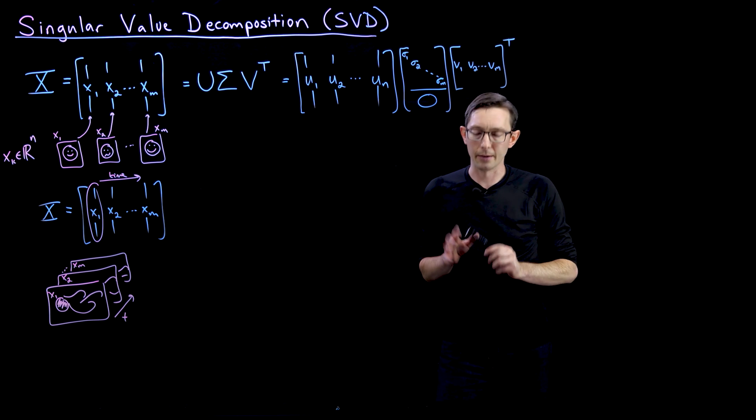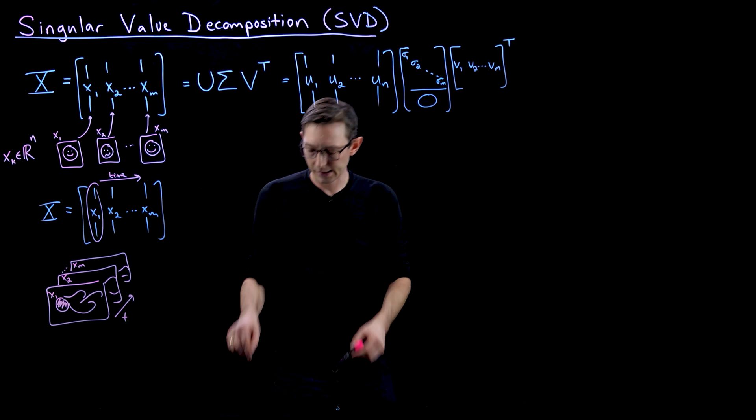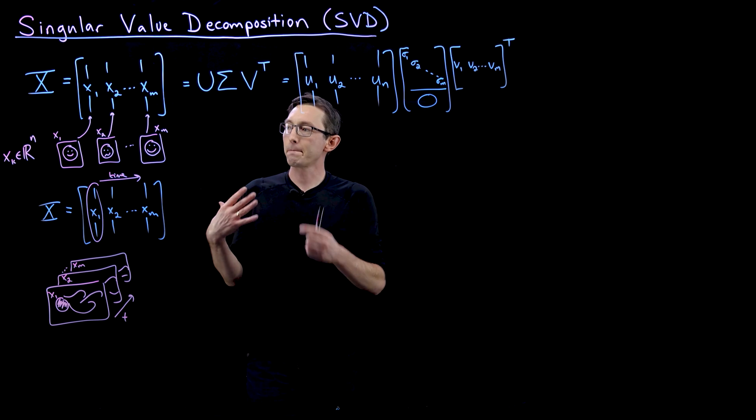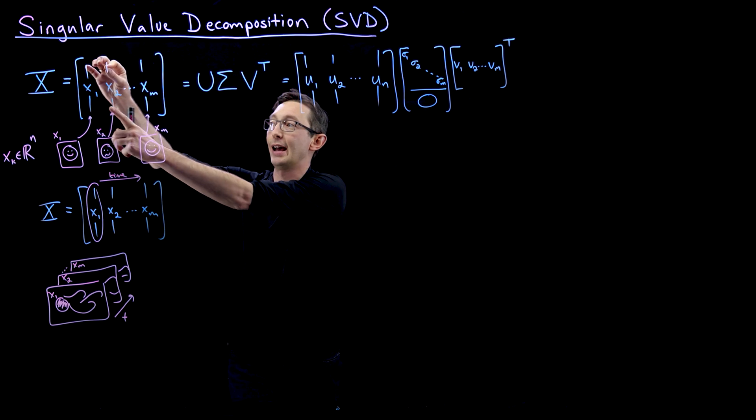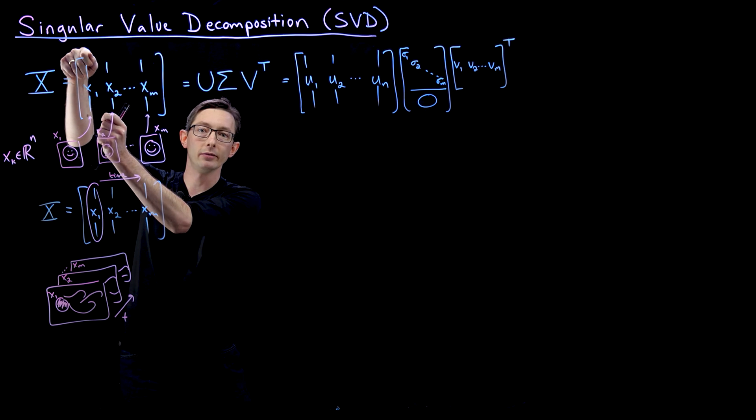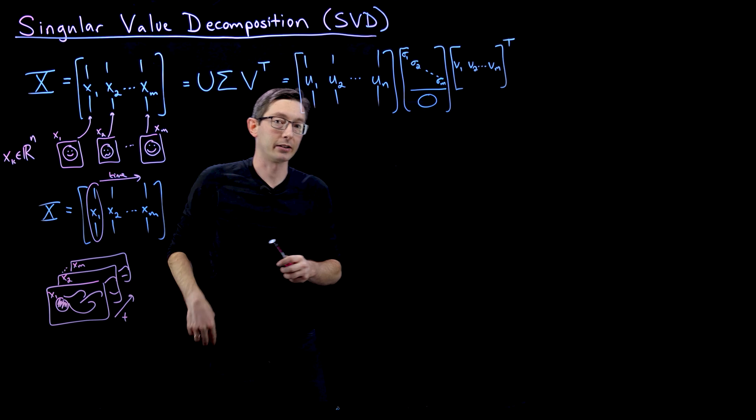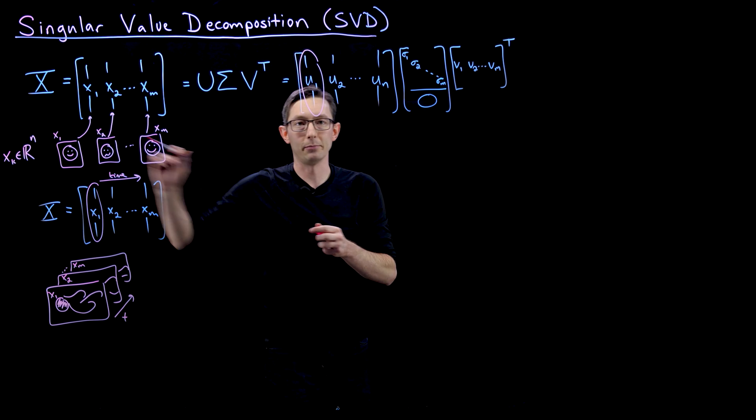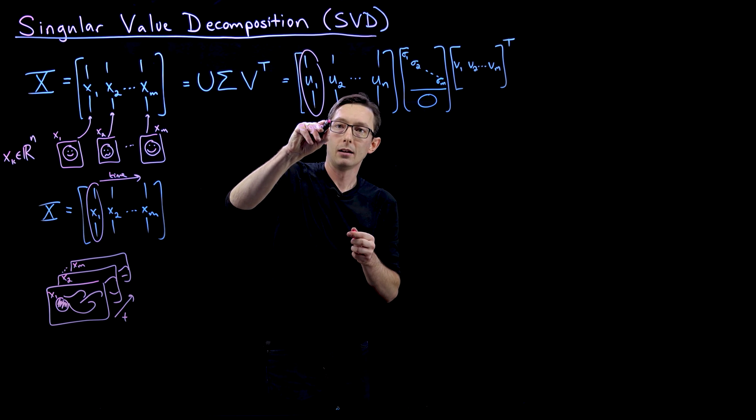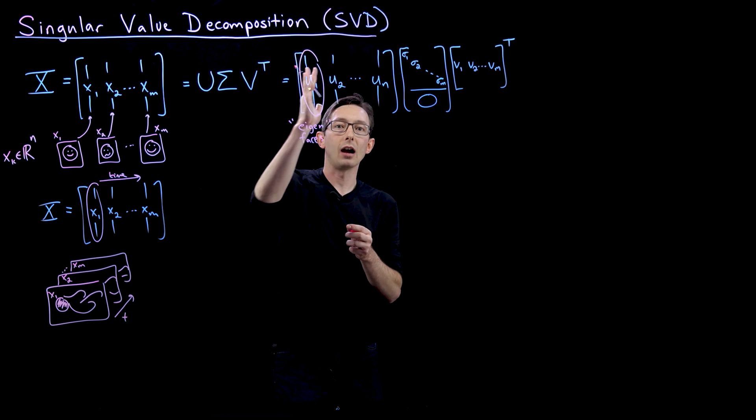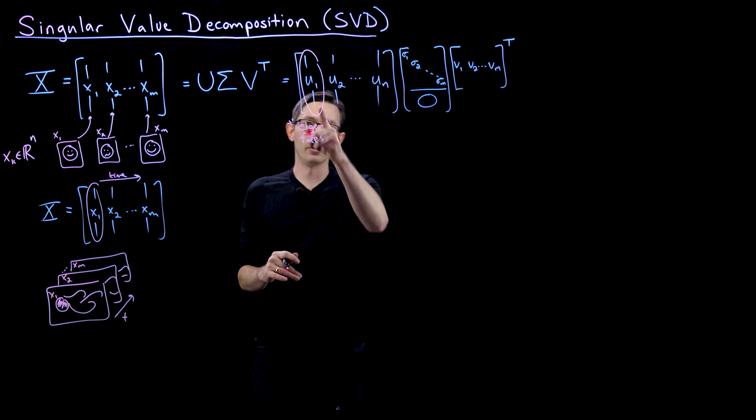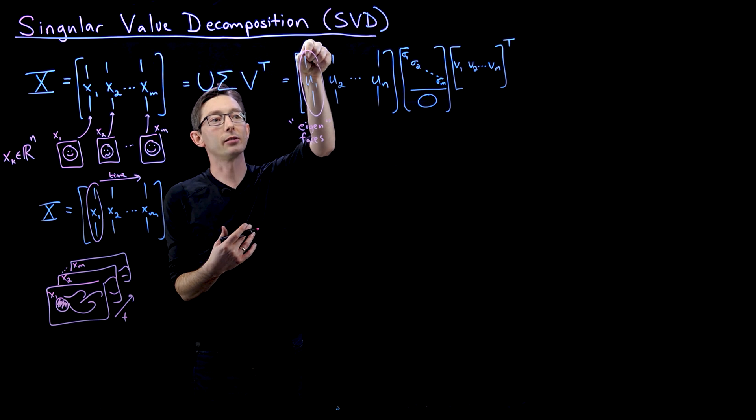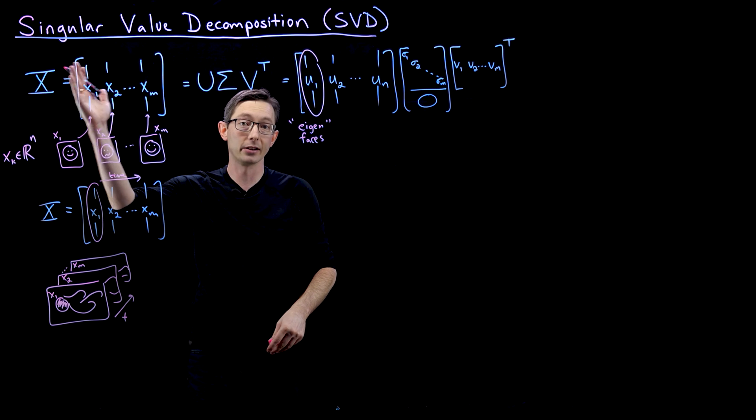So a few things that are important to note. These columns of U have the same shape as a column of X. So if X is a million by one vector, then the columns of U are million by one vectors. And the way I think about these, in some sense, in this face example, these would be my eigenfaces. These are hierarchically arranged. So U1 is somehow more important than U2, and so on and so forth, in terms of their ability to describe the variance in the columns of X.